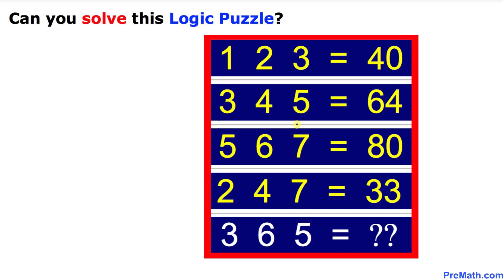Welcome to pre-math. In this video tutorial we are going to solve this given logic puzzle. And here's the puzzle: one two three is going to give us 40, three four five is going to give us 64.